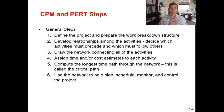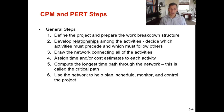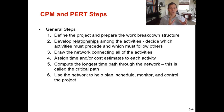Step five is to compute the longest time path through the network — this is called the critical path. The critical path is the longest time through the path, not the most steps or the shortest time. You compute that and figure out how long the project is going to take to complete. Step six is to use the network to help plan, schedule, monitor, and control the project — using the AON network diagram and its output to help control the project.